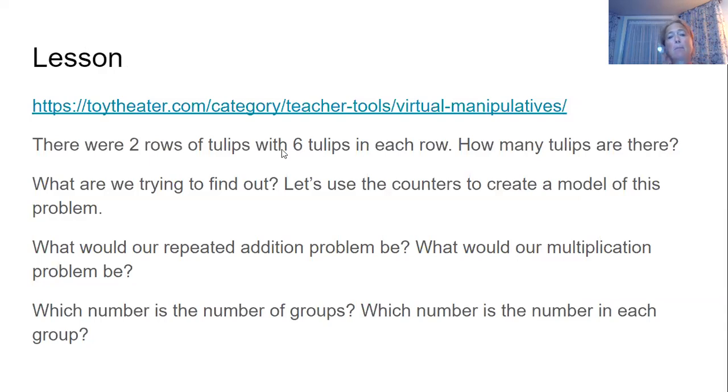All right, so today's problem is there were two rows of tulips with six tulips in each row. How many tulips are there? So before we start, what are we trying to find out in this question? The first thing we need to find out is what is the question asking us. It's telling us that we have two rows of tulips with six tulips in each row. So the two rows are the number of groups. We have two groups of tulips, and within each group we have six tulips. That's the number in each group. Now the question is asking us how many tulips are there. So we want to know with both those groups together, how many tulips we have.